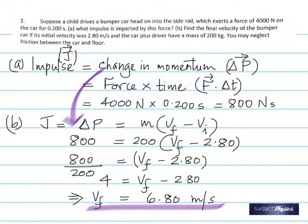An airbag is an actual explosion — it has 0.1 seconds or less to deploy. If the airbag opens after you've already hit something, it would hurt you more. The airbag must be fully inflated before you move forward. Think about the engineering involved. We'll now compare the force with and without the airbag.